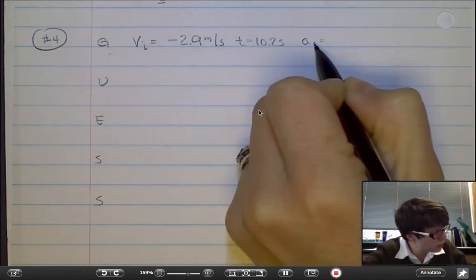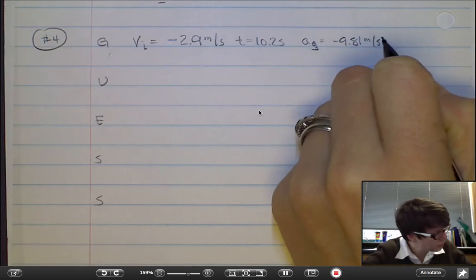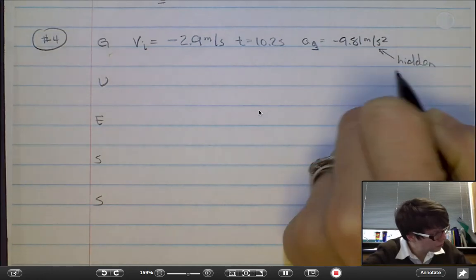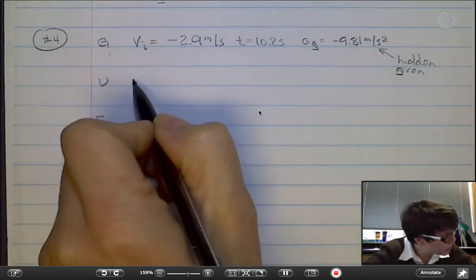I also have a hidden given in here. The acceleration of gravity was hidden from me when I initially read the problem. The unknown: How high is the cliff?